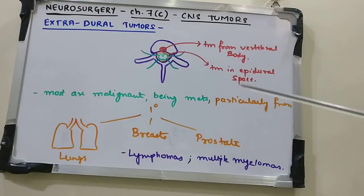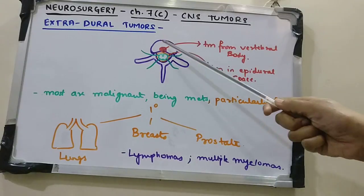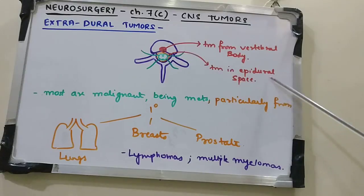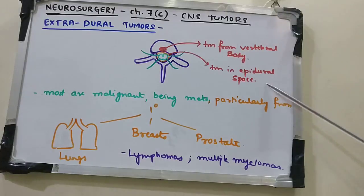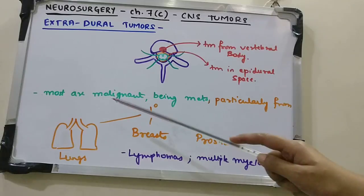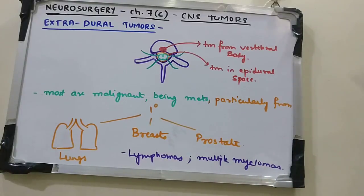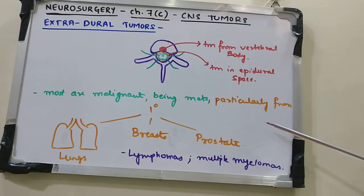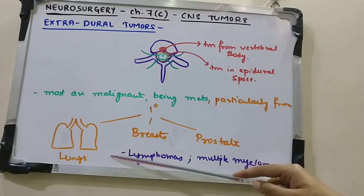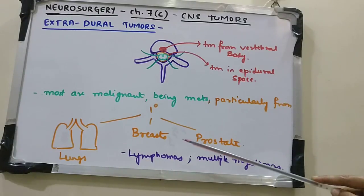Extradural tumors originate in the vertebral body and less commonly in the epidural space. Most of them tend to be malignant and represent metastatic tumors, particularly coming from primaries in the lungs, breast, and prostate.